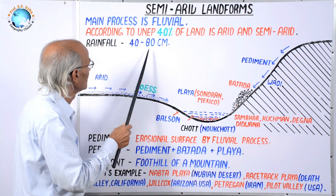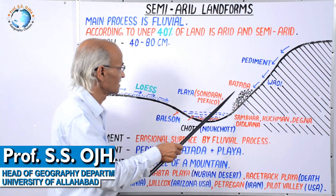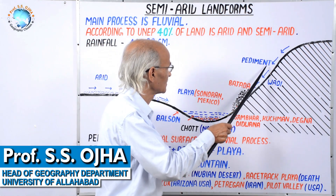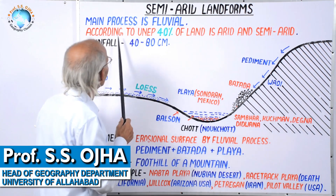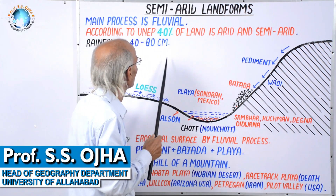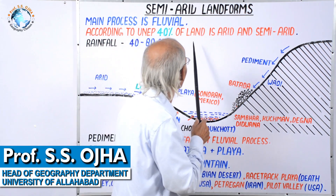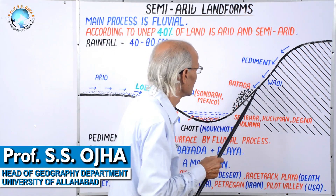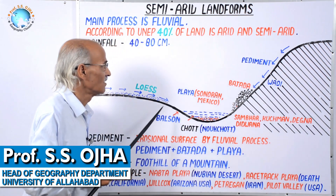The annual rainfall amount is 40 to 80 cm, and that is why fluvial process predominates here. According to the UNEP — United Nations Environment Programme — report, about 40% of the land area is arid and semi-arid collectively.